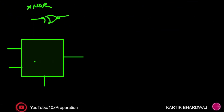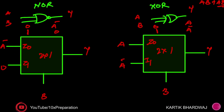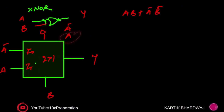Now for the XNOR gate: inputs a and b, y is the output, 2x1 MUX with I0 and I1. The XNOR equation is a·b + a-bar·b-bar. When b is zero, output is a-bar. When b is one, output is a. So I0 is a-bar and I1 is a. Since a-bar is needed, you will need a NOT gate for that input as well.